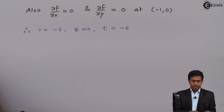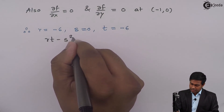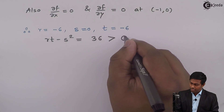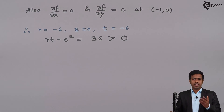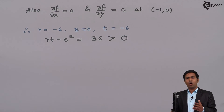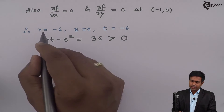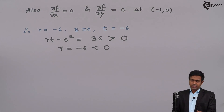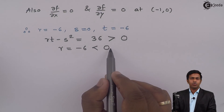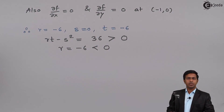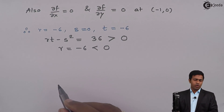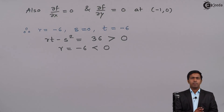Now we will find out the condition rt - s². By computing rt - s², we get (-6) × (-6) - 0² = 36, which is greater than 0. Whenever we get rt - s² > 0, we say there is a minima or maxima at that stationary point. To determine which, we check the value of r. Here r = -6, which is less than 0, so we can say that at the point (-1, 0) we have maxima. Therefore, (-1, 0) is a stationary value of the function z = x³ + 3xy² - 3x.